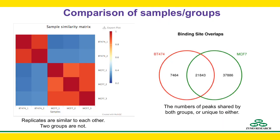After peaks are called for each sample, we can count the number of reads in each peak and compare the counts and peaks among different samples. On the left side, you can see a similarity matrix of samples showing two groups, one with two replicates and one with three replicates — the replicates are similar to each other, but the two groups are not. On the right side, you can see a Venn diagram depicting the number of peaks shared by the two groups or unique to either group. These overview figures are critical to get a big-picture understanding of your data.